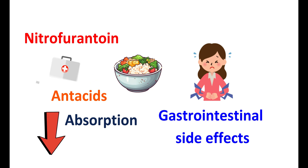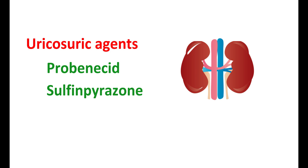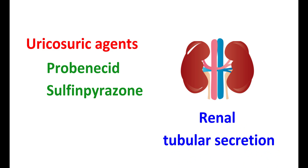Therefore, antacids should not be administered simultaneously with Nitrofurantoin. A few uricosurics can interfere with excretion of Nitrofurantoin. Medications like Probenecid and Sulfinpyrazone are used to increase uric acid excretion and are particularly used in people with elevated levels of uric acid. These uricosurics can affect the renal tubular secretion of a few medications, and in particular, they can inhibit the renal tubular secretion of Nitrofurantoin.